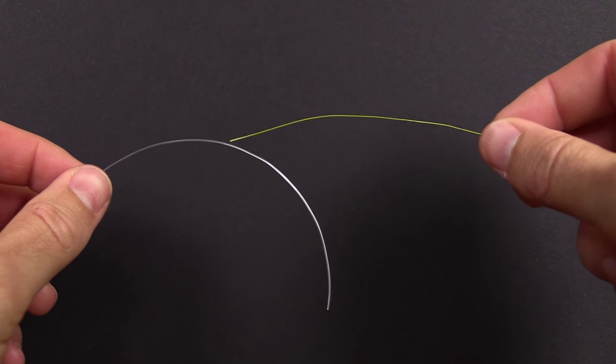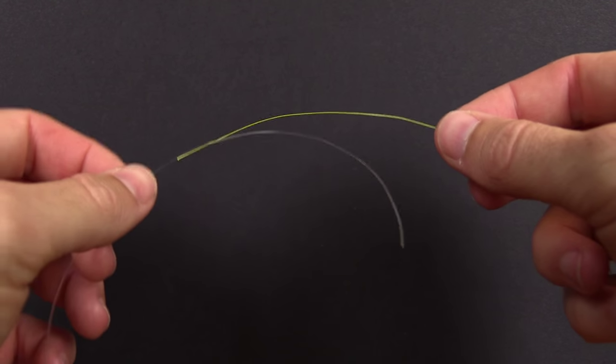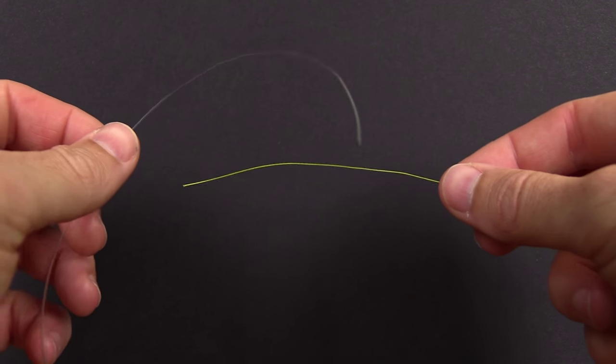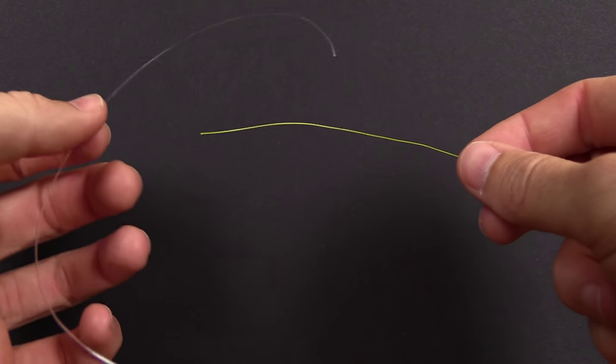In this video we're going to tie the surgeon's knot using a braided line to a mono leader. This is a nice, quick, easy knot to tie and actually surprisingly strong, especially for how quick it is.